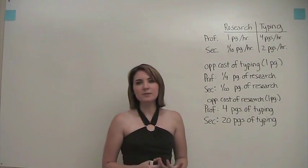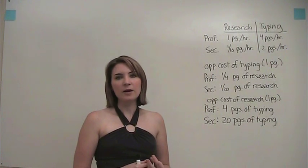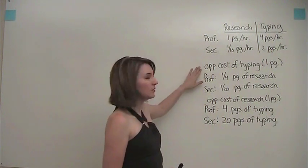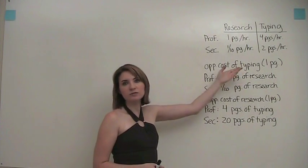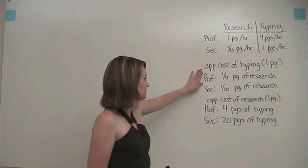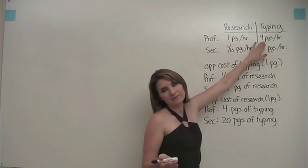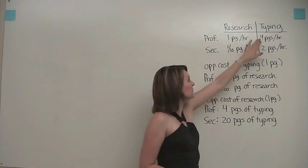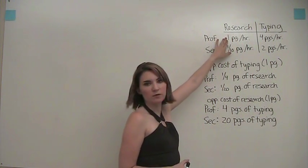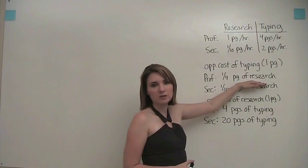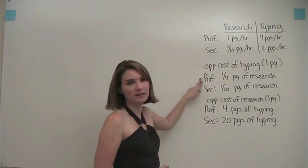Rather than think about absolute productivity, what if we thought about each activity in terms of what has to be given up? We define opportunity cost as what has to be given up in order to get something. The opportunity cost of typing is how much research has to be given up to get one page of typing. It takes the professor 15 minutes on average to type one page. In that 15 minutes, he could have produced one-fourth of a page of research. So his opportunity cost of typing one page is one-fourth of a page of research.